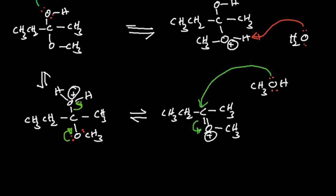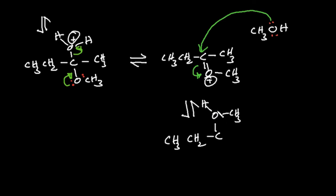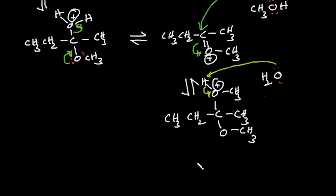This makes another intermediate with a positive charge. We already have water in our reaction mixture. This water molecule grabs this hydrogen and breaks this bond. Now we have our desired product — this is the acetal.